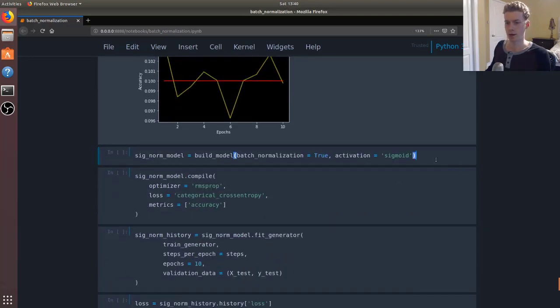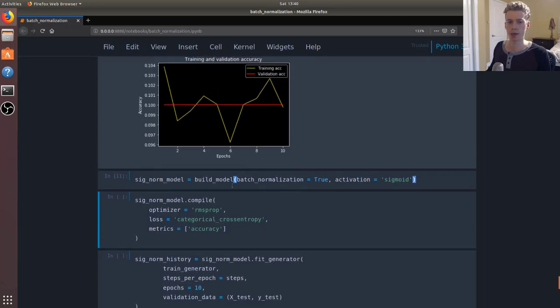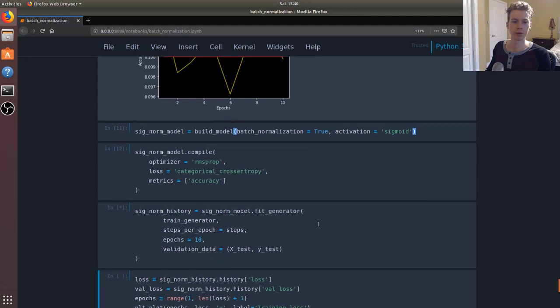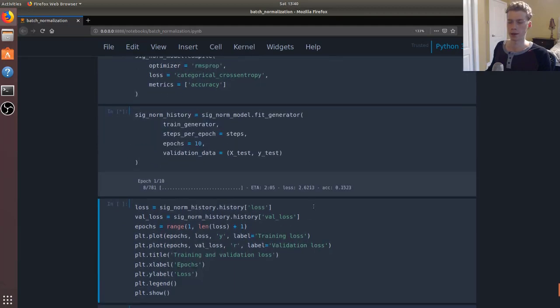Now let's go ahead and do the same thing, but this time we are going to create a batch normalization layer. Again, I'm going to pause the video and then come back when this is done.